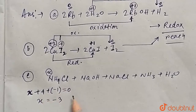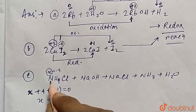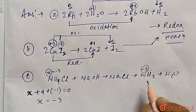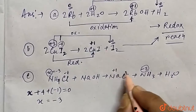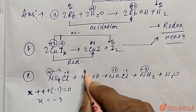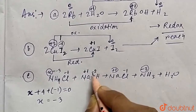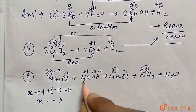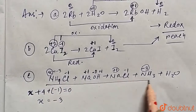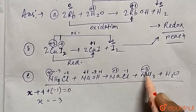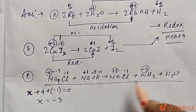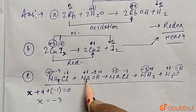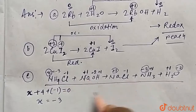In NH₃, nitrogen also has oxidation state -3 (since 3×(+1) + x = 0 gives x = -3). Chlorine is -1 in both NH₄Cl and NaCl — no change. Sodium is +1 in both NaOH and NaCl — no change. Oxygen is -2 and hydrogen is +1 in water — no change. No change of oxidation state occurs for any atom in reaction C, so this is not a redox reaction.